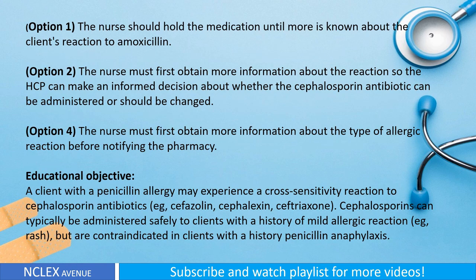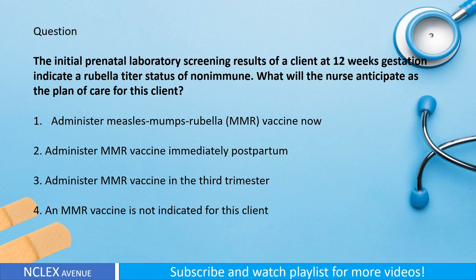However, cephalosporins are contraindicated for clients with a history of anaphylactic reactions to penicillin, and a different antibiotic should be prescribed. Option one: The nurse should hold the medication until more is known about the client's reaction to amoxicillin. Option two: The nurse must first obtain more information about the reaction so the HCP can make an informed decision. Option four: The nurse must first obtain more information about the type of allergic reaction before notifying the pharmacy. Educational objective: A client with a penicillin allergy may experience cross-sensitivity to cephalosporins (cefazolin, cephalexin, ceftriaxone); cephalosporins can typically be administered safely to clients with a history of mild allergic reaction but are contraindicated in clients with a history of penicillin anaphylaxis.